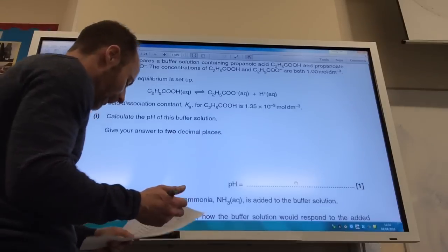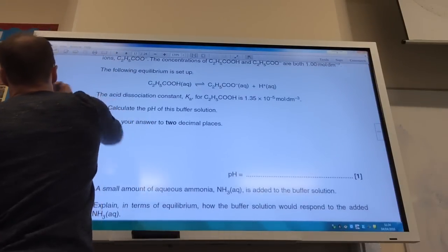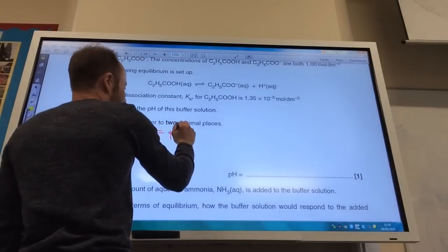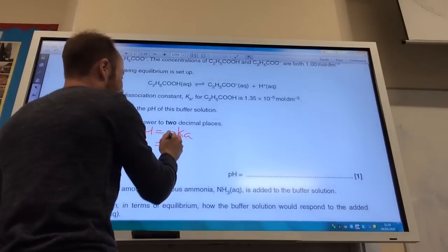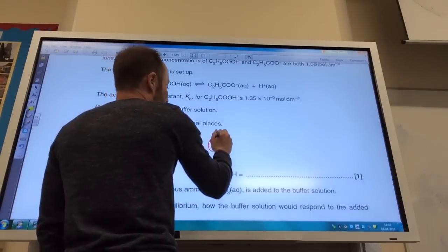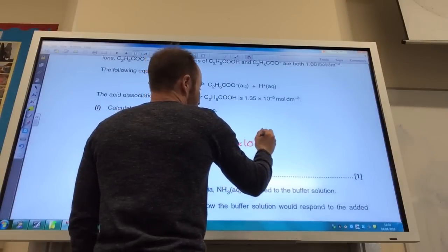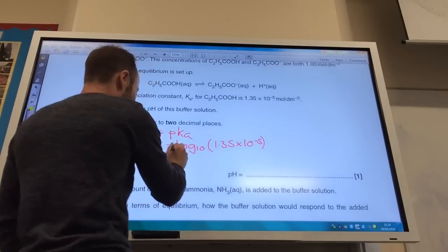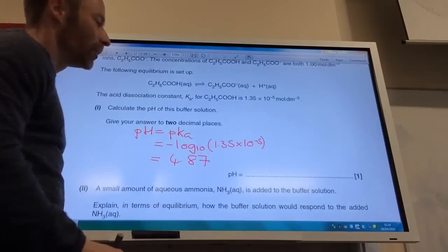Calculate the pH of this buffer solution. Because they're the same, we can simplify our equation to the pH is equal to pKa. Your Ka is, so it's minus log to the base 10, 1.35 times 10 to the minus 5, and that is going to equal 4.87 to 2 decimal places.